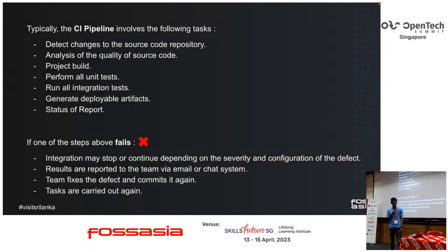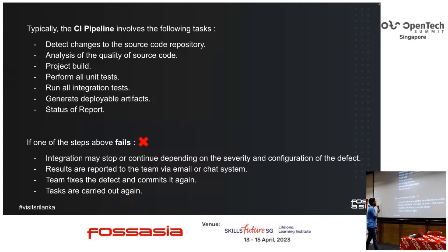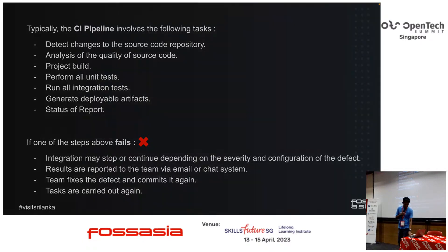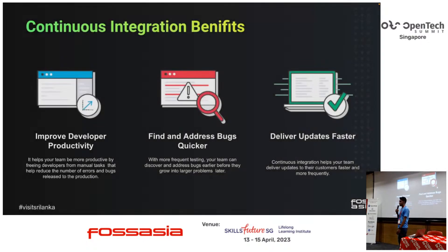Typically, the CI pipeline involves the following tasks: it is used to detect changes in your source code; we can build and generate the artifacts that we need to deploy; we can perform some basic tests such as unit tests and integration tests; and you can have a status report — if you are running a code checker, there will be a status report showing the percentage of your coverage. And if the above steps fail, as I said earlier, this will notify the relevant team so you can have a look and fix the issue.